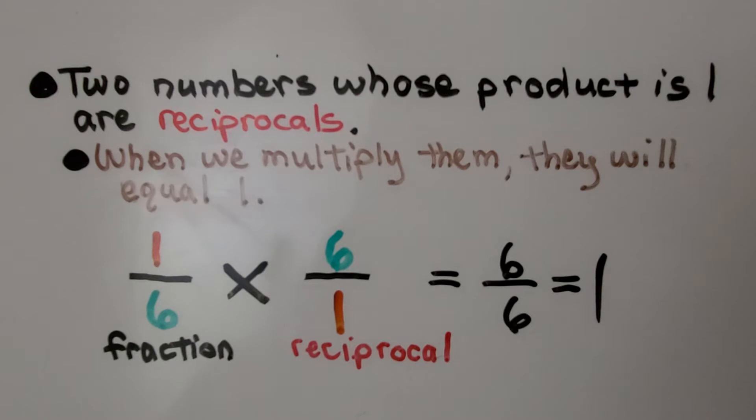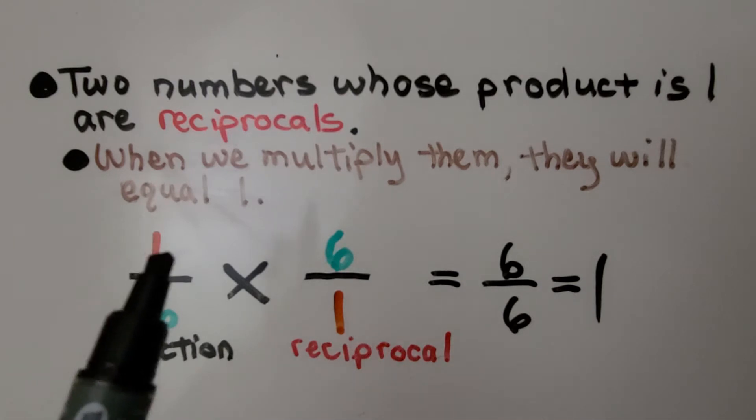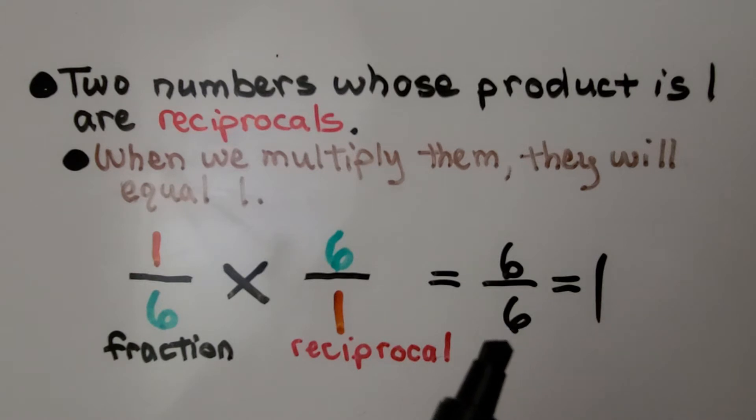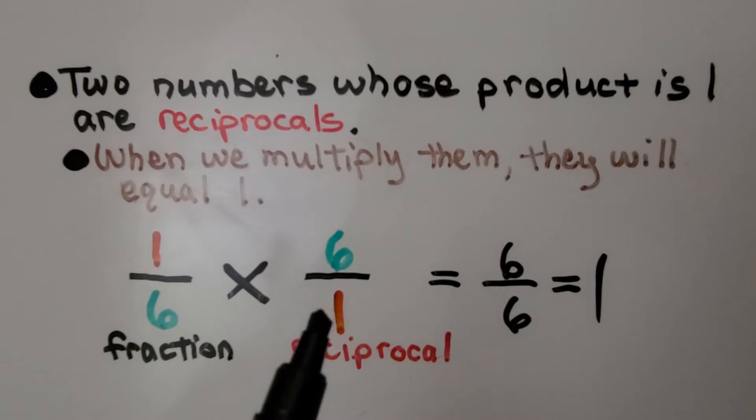Two numbers whose product is 1 are reciprocals. When we multiply them, they will equal 1. We have 1/6 as our fraction. Its reciprocal, its flipped upside-down version of itself, is 6 over 1. When we multiply 1 times 6, it's 6 for the numerator, and 6 times 1 is 6 for the denominator, and 6/6 is equal to 1. One whole. Because it's equal to 1, we know that 6 over 1 is the reciprocal of 1/6.